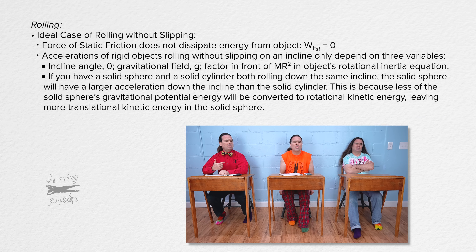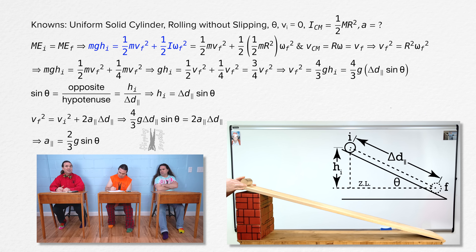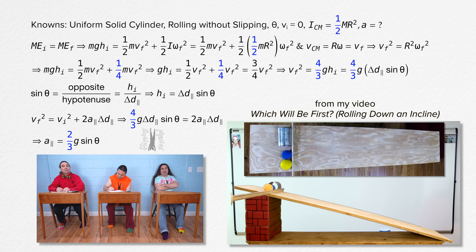The rotational inertia of a solid cylinder is one half mass times radius squared. Mechanical energy of the earth-and-cylinder system stays constant as the cylinder rolls down the incline, starting with all gravitational potential energy and ending with both translational and rotational kinetic energies. The acceleration of the solid cylinder worked out to be two-thirds gravitational field strength times the sine of the incline angle. The mass and radius dropped out, and the fraction is determined by the factor in front of mass times radius squared in the rotational inertia equation.